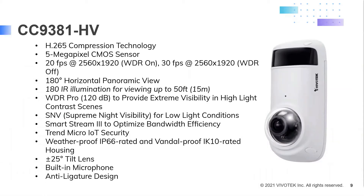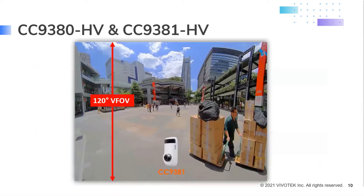The CC9381 is very similar to the CC9380. It also comes with H.265 compression, 5 megapixel CMOS sensor, 20 frames per second with WDR on and 30 frames per second with WDR off, SmartStream 3 to save additional bandwidth and storage, secured with Trend Micro, and also has the anti-ligature design. The difference from the previous model is the IR illumination feature, for viewing up to 50 feet in complete darkness. With the CC9380 and CC9381, you have a 120 degree vertical field of view, so remember that detail when thinking of mounting locations.